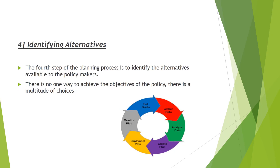The fourth step of the planning process is identifying alternatives. There is no one way to achieve the objectives of a policy — there is a multitude of choices, and all alternative courses should be identified. A policymaker may choose an innovative alternative hoping for more efficient results, or stick to a more routine course of action. The challenge with this step is not finding alternatives but narrowing them down to a reasonable number that can be thoroughly evaluated.